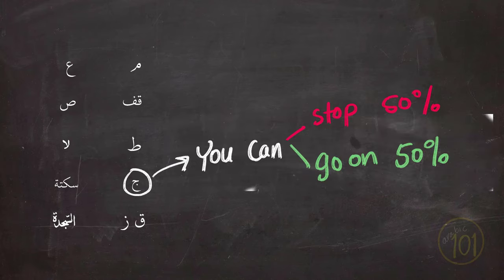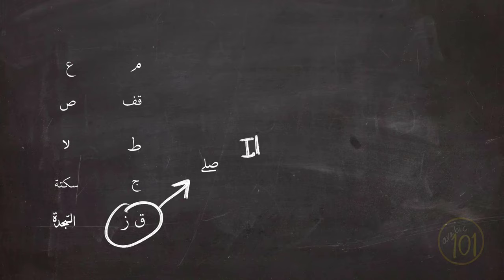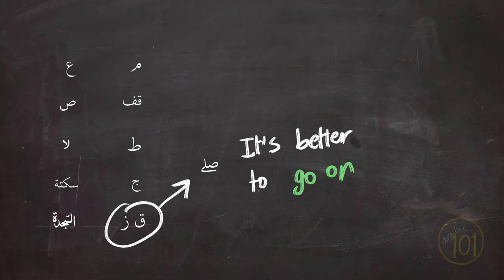Next is the signs of Zay and Qaf. And both of these signs are equivalent of the sign Sil in Uthmani Quran, which means it is better to keep going. You can stop if you want but it will be better if you keep on reading. So you can compare it to 70% keep going, 30% to stop.